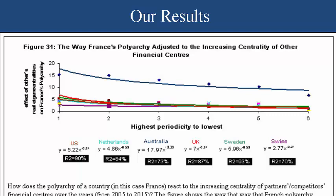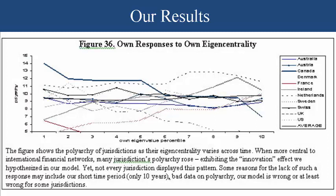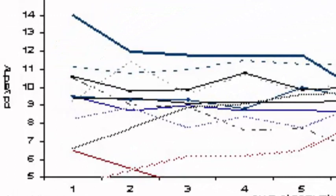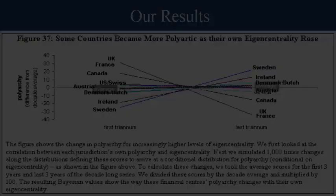Remember, we talked about polyarchy changing over time in response to a financial center's centrality. In this dynamic view of polyarchy, we're going to expect some countries to be becoming more polyarchic and some countries to become less polyarchic over any particular snapshot that we take.